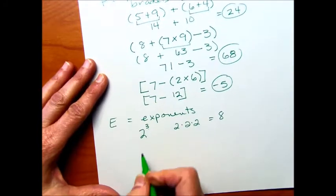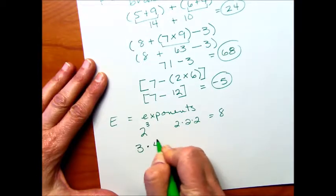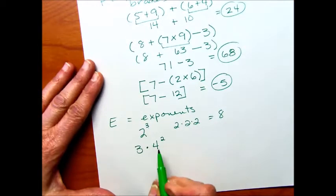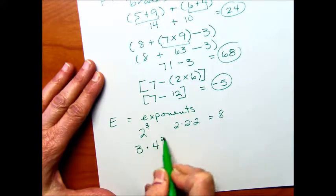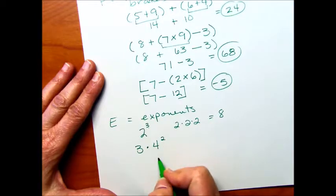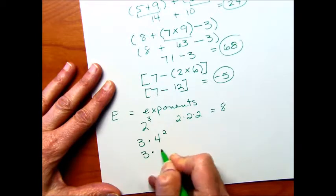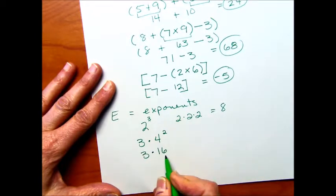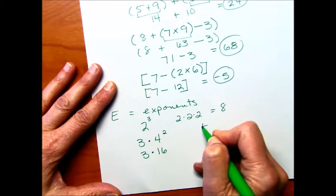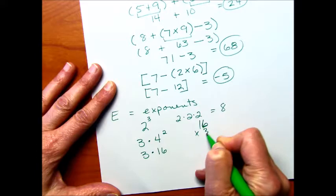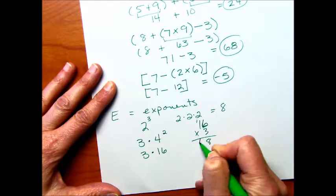But you might see problems with exponents. For instance, 3 times 4 squared. Now the thing is, before we can multiply, we have to evaluate this exponent number. And so 4 squared, that's 4 times 4, or 16. So 3 times 16. Now I can do the multiplication problem here, and we could go, let's see, 16 times 3, that's going to be 8, 18. So that's 48.